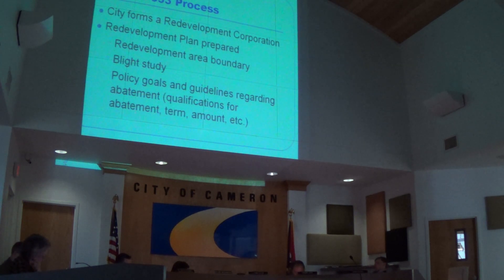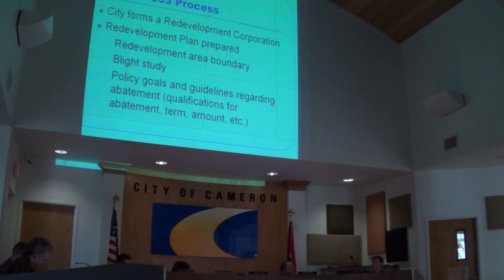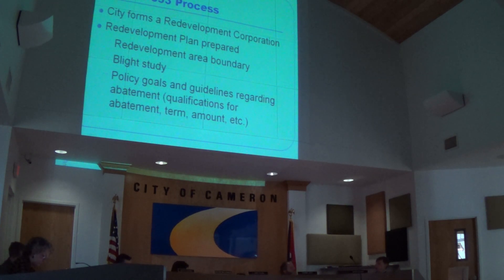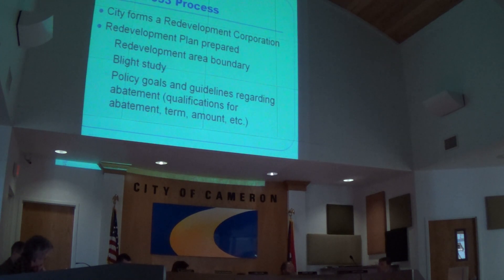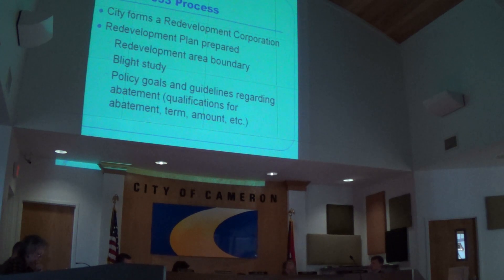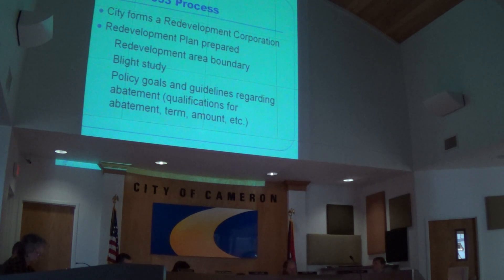The board can have between three and thirteen members. It's not specified in the statutes exactly who gets appointed, so we have flexibility. For example, if we do five members, it could be the five council members. Or it could be five members with one from the county, one from the school district, and three appointed by the mayor — that's something we can work out as we get this going.